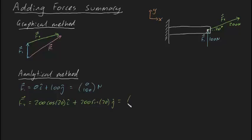And if you were to plug that into your calculator, the 200cos20 will evaluate out into 187.94 newtons, and the vertical component would be 68.4 newtons. Like that.